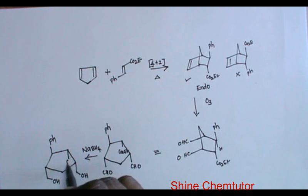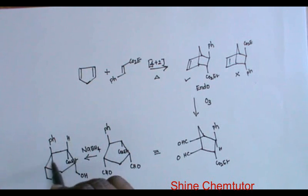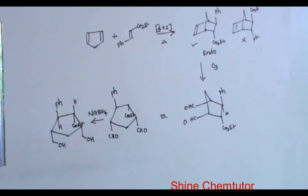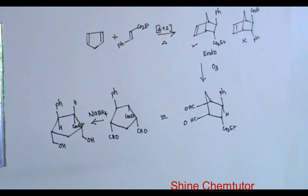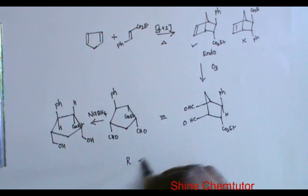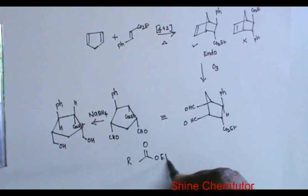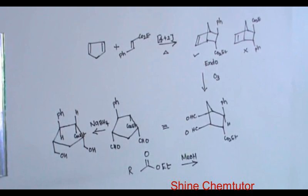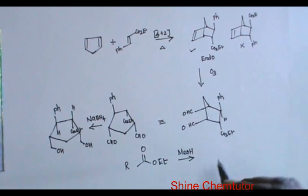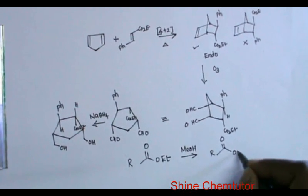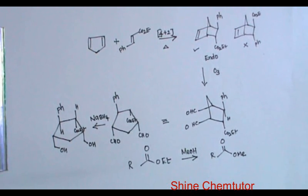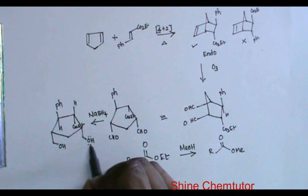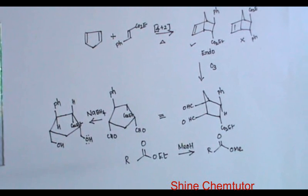Now, CO2Et is at the bottom. There is cyclization between CO2Et and the alcohol — basically it is transesterification. Consider this ethyl ester. If you add methanol, if you dissolve this ethyl ester in methanol, after some time the product you get will be like this: methanol will displace ethanol to give this. Similarly, here this alcohol will displace Et to give the product.